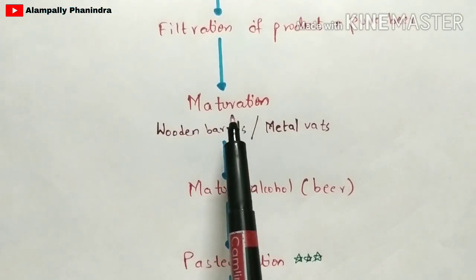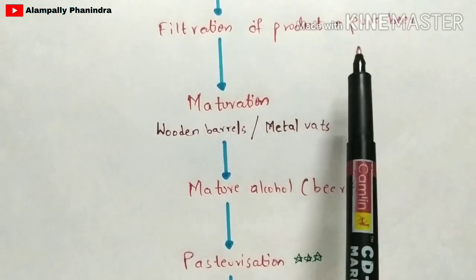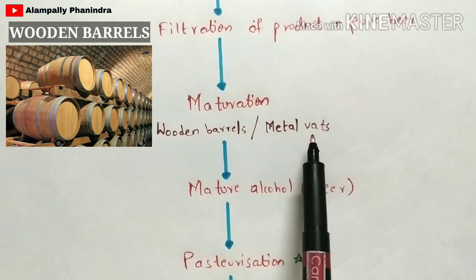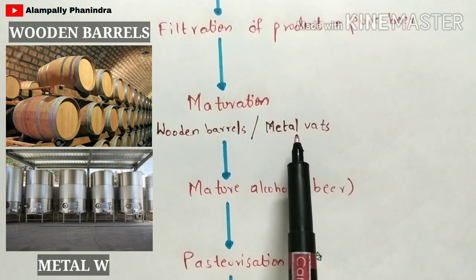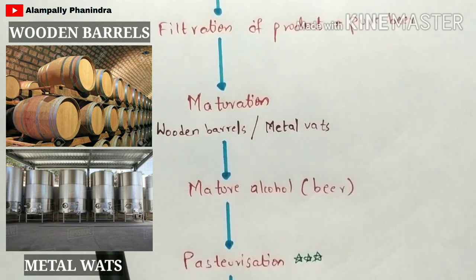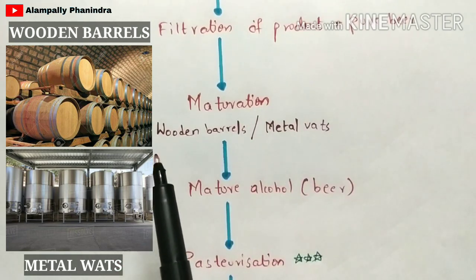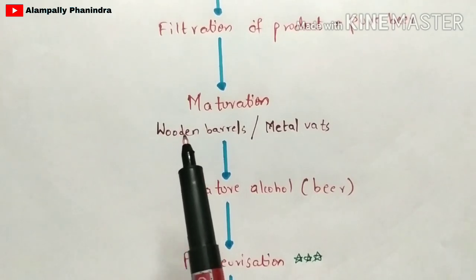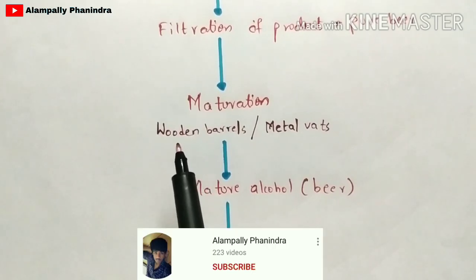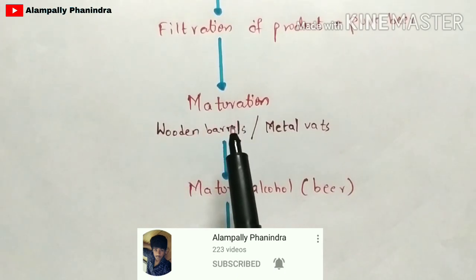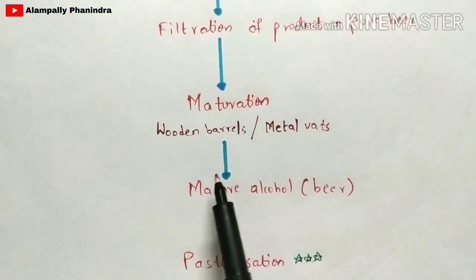In maturation, the filtered pure beer is stored in wooden barrels or metal vats for four to five days. During these four to five days, flavors develop inside the beer. That is the main reason the maturation process is performed — to produce mature beer with developed flavors.